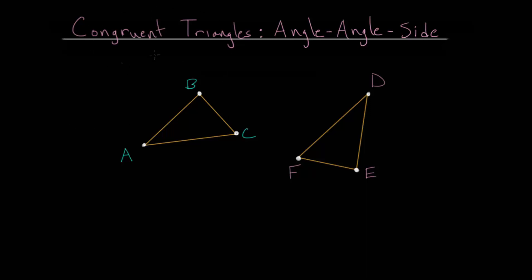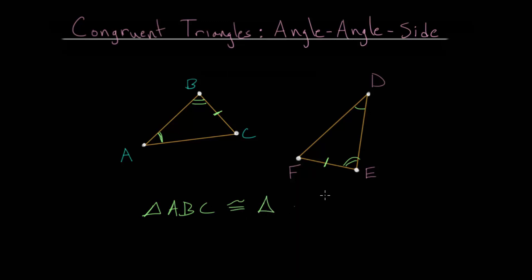In this video, I'd like to talk about congruent triangles and the angle-angle-side congruence rule, or postulate. Essentially what this is saying is that if we have two triangles, and we know this angle is equal to this angle, we know angle B is equal to angle E, and we know side length BC is equal to side length EF, then these two triangles are congruent. We can say that triangle ABC is congruent to triangle DEF.